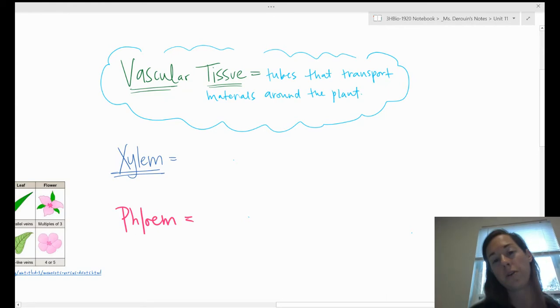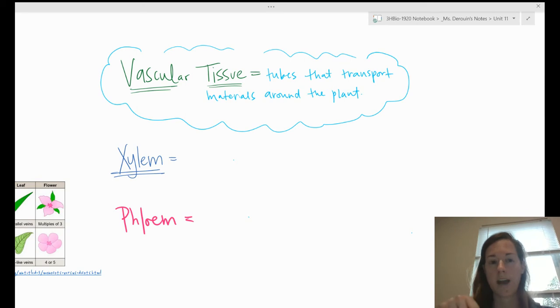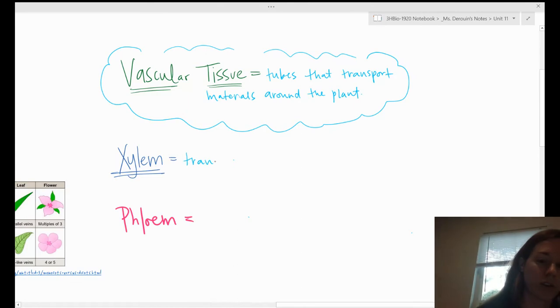Actually, you have vascular tissue as well - it's your arteries and your veins that transport nutrients, oxygen, carbon dioxide around your body. Plants have vascular tissue as well, but it's called xylem and phloem. I did xylem in blue because it transports water.